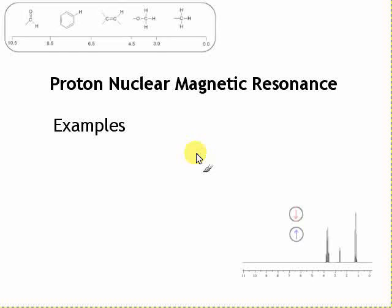Some examples of proton NMR spectra. We'll have a look at integration, chemical shift, and coupling, and see how these are consistent with the molecular structure.